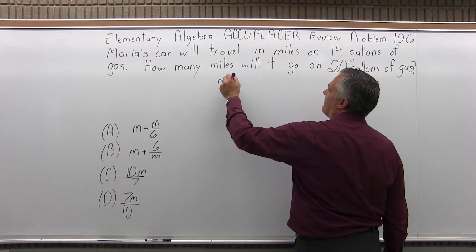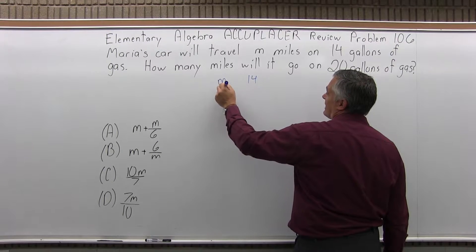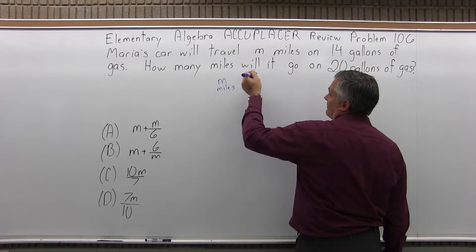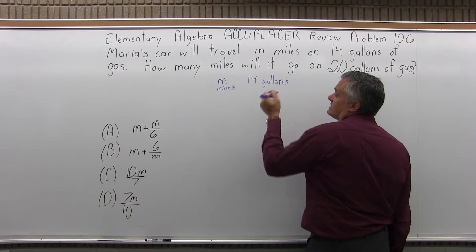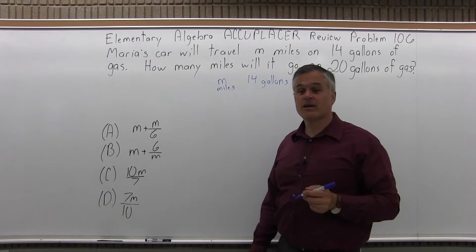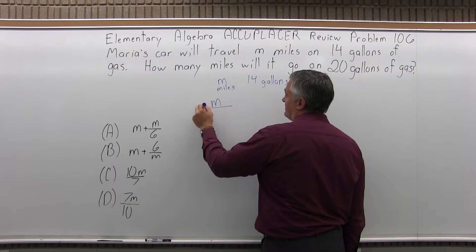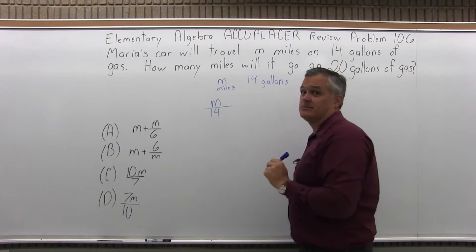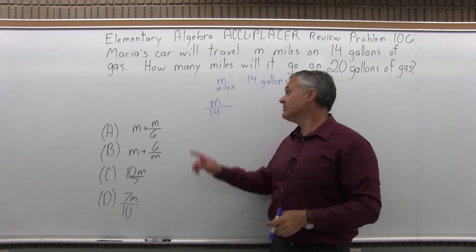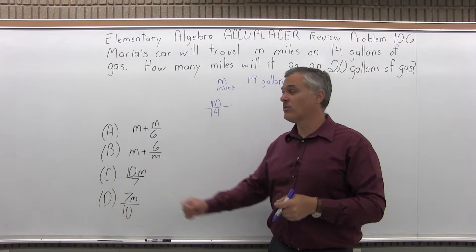So we're going M miles with 14 gallons of gas. What I'd like to know is the miles per gallon. Cars are always giving miles per gallon. Well it goes M miles in 14 gallons. That is the miles per gallon. So one gallon will go M over 14. That's the distance the car will travel with one gallon.